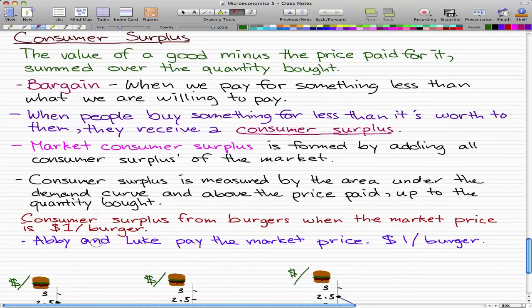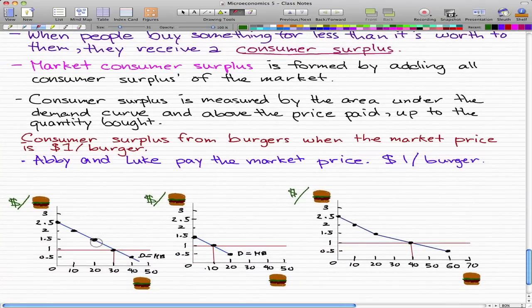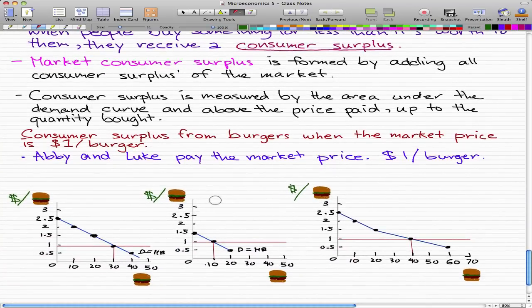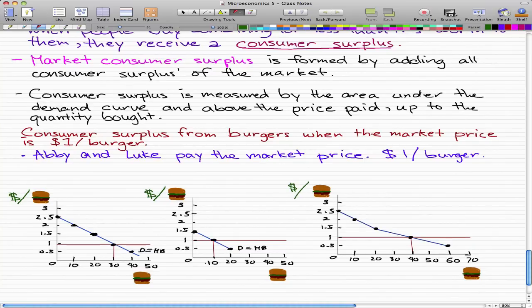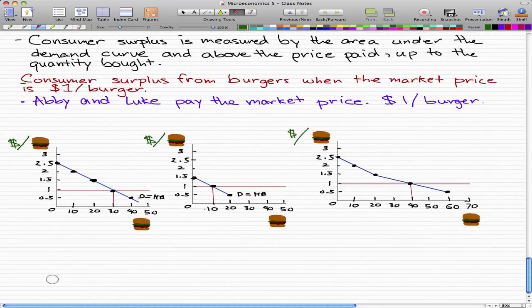We're going to use Abby and Luke as examples again. They pay the market price, which is $1 per burger. Let's look at Abby in this video and we'll do Luke in the next video.